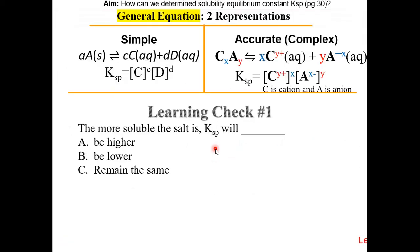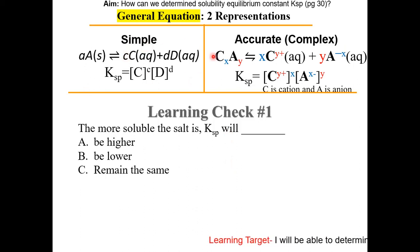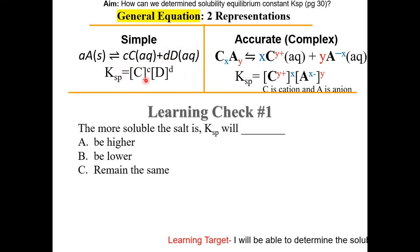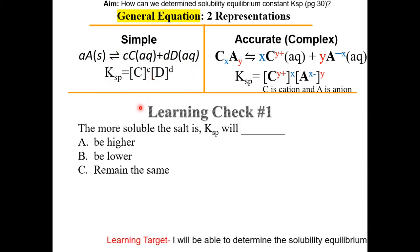Learning check number one: the more soluble the salt is, Ksp will do what? If a salt is more soluble, the concentration of the ions will increase. And since Ksp is dependent on the concentration of the ions, if the concentration of the ions increases, Ksp will increase as well.